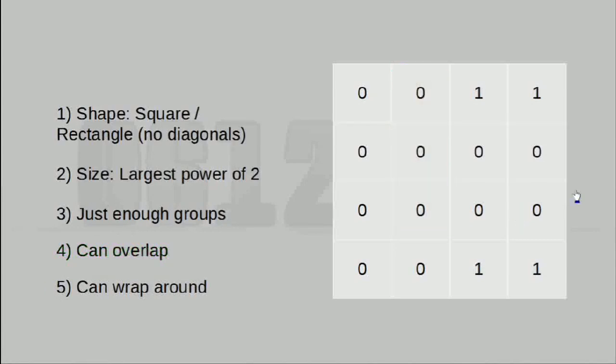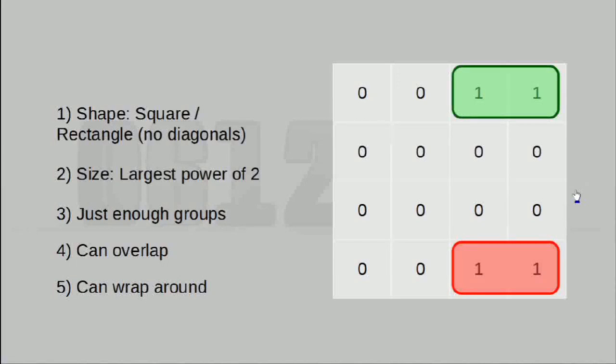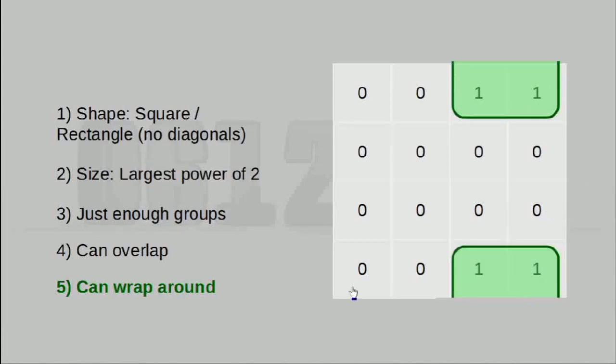What about something like this? You may be tempted to just create 2 groups like this, but that is incorrect, because groups can actually wrap around the edges of the table. This is actually one contiguous group that wraps around the edge of the table, selecting all 4 ones at once.